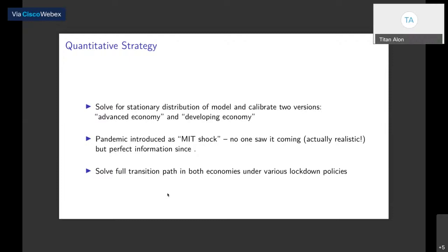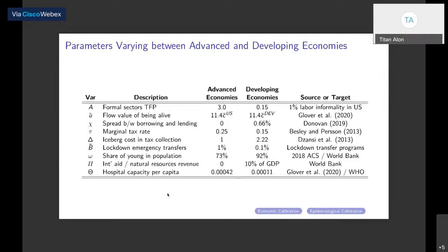I want to highlight the key margins that we allow to differ between advanced and developing countries: differences in fiscal capacity — developing countries are about half as good at raising taxes as advanced ones; much lower hospital capacity; much greater share of young population; and obviously much higher levels of labor market informality. These are the themes discussed earlier and supported by Norman's evidence. We've done a detailed job here trying to make sure we've captured these margins accurately.